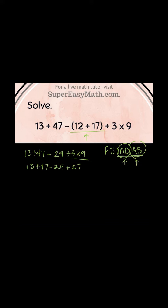You just go from left to right one at a time. So that means because I see I have addition, subtraction, addition left, I'm going to do all of these in order from left to right. So the 13 plus 47 gives me 60. And then I'm just going to bring down the minus 29 plus 27.